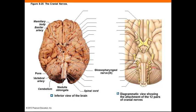The glossopharyngeal nerve, number 9, is a mixed nerve innervating the tongue and pharynx. Its nuclei are in the medulla oblongata. The sensory portion monitors taste on the posterior third of the tongue and monitors blood pressure and blood gases. The motor portion controls pharyngeal muscles used in swallowing and fibers to the salivary glands.